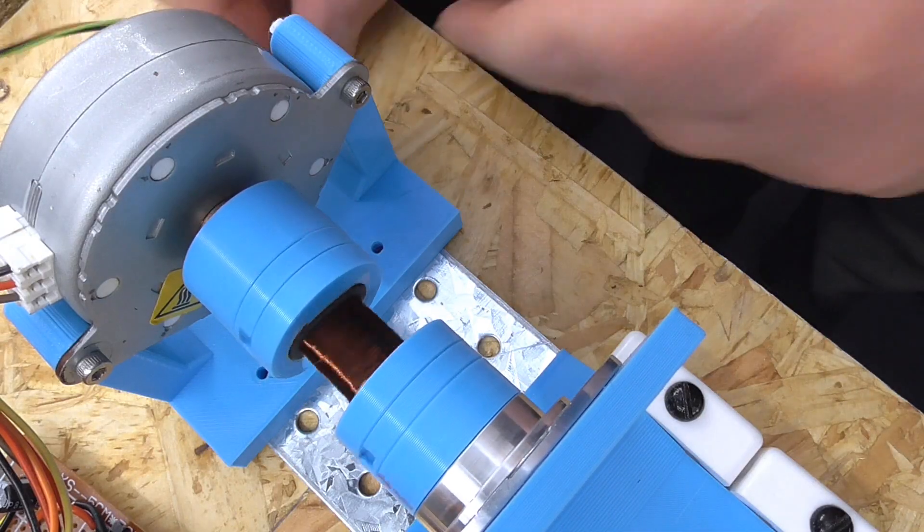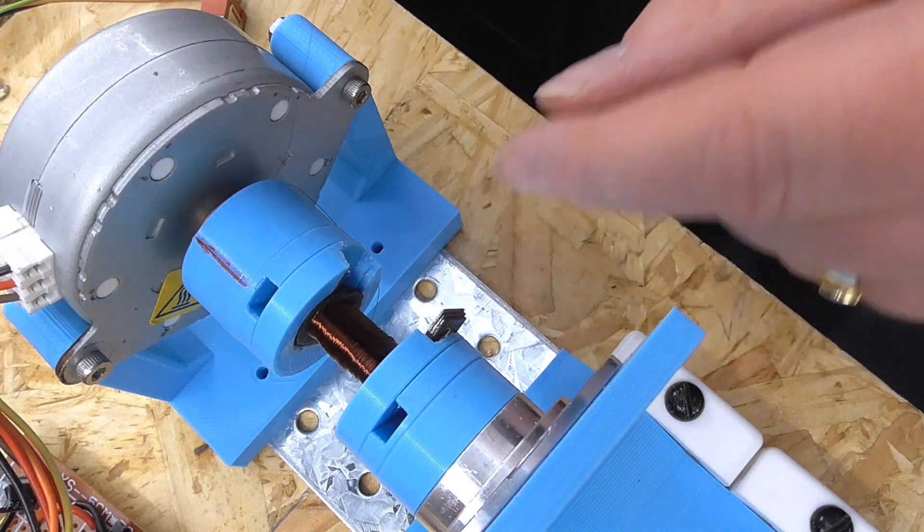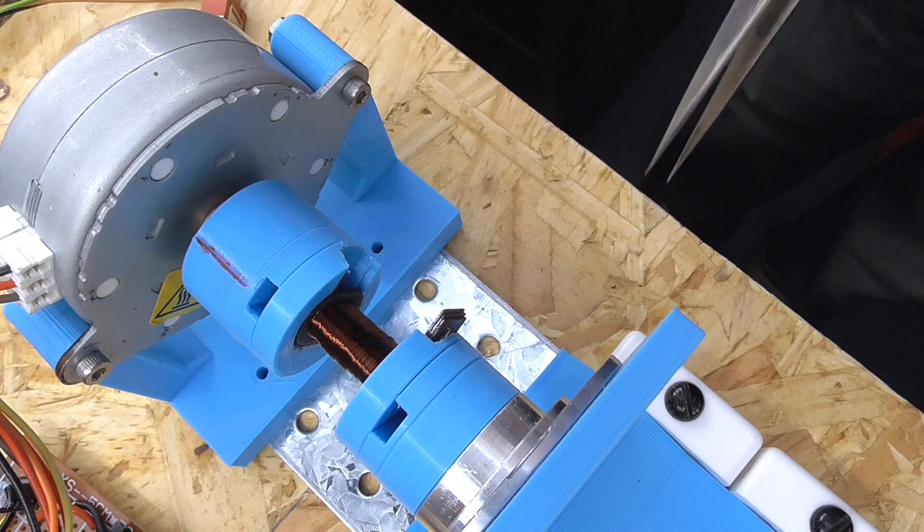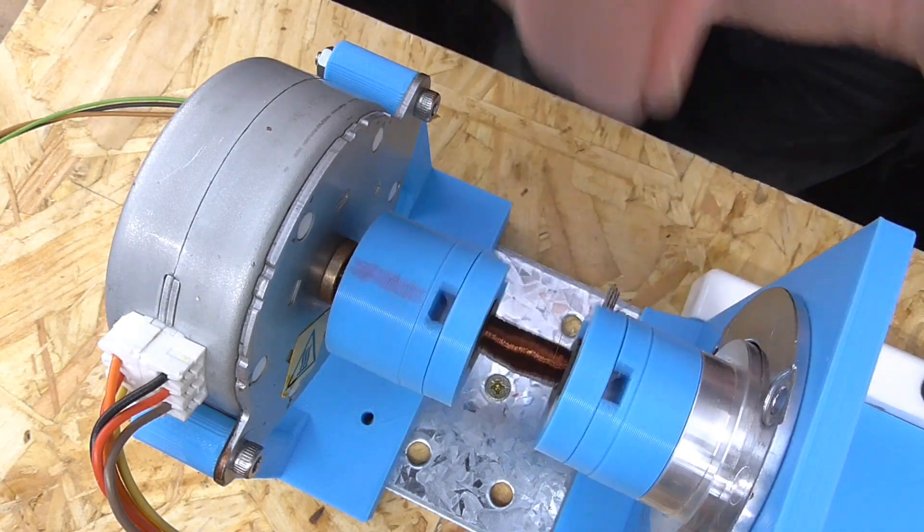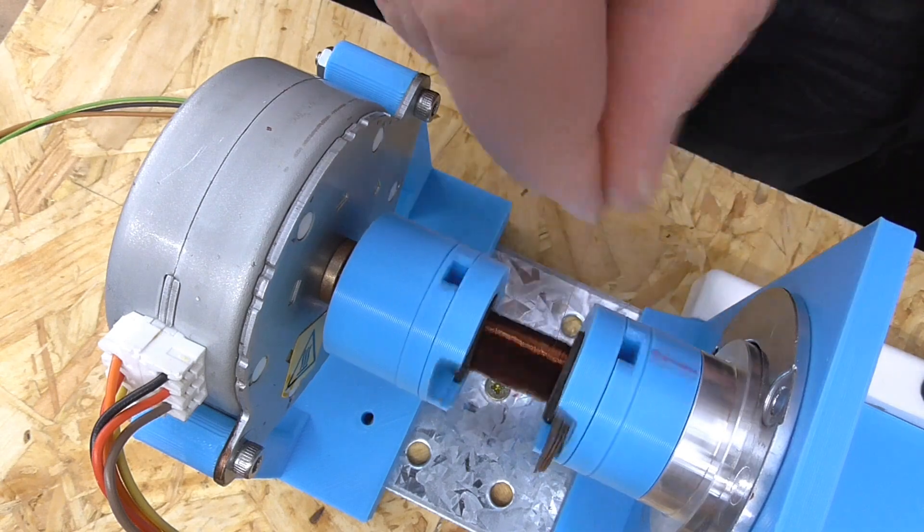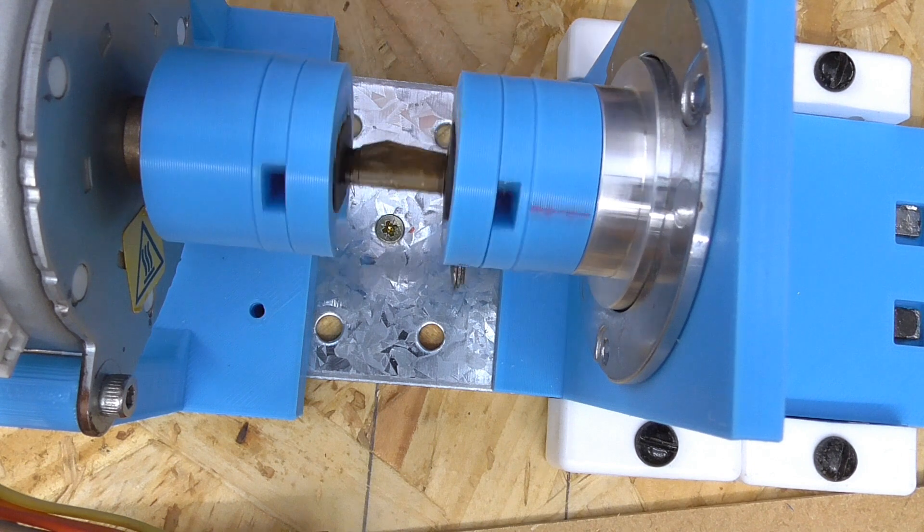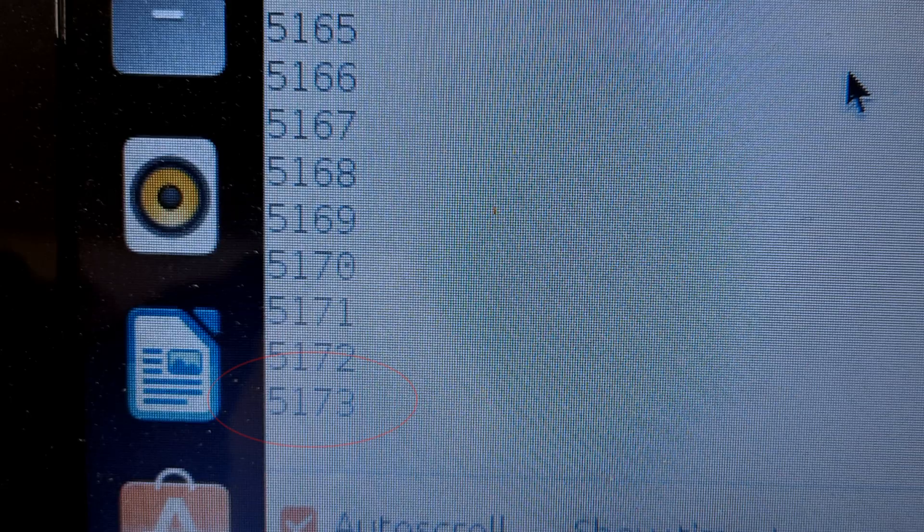The wire does get caught up a few times so I have to keep stopping and restarting. I do want to do as much on the machine as possible though as it is counting the turns. Great that's off now. That's nearly 5200 turns and doesn't include some wire I took off by hand. I estimate there may have been 5500 turns on there.